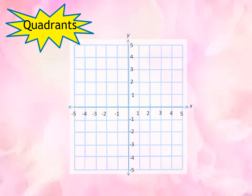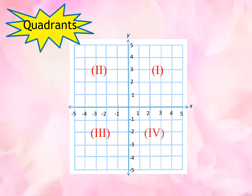So in a coordinate plane, we have four quadrants: Quadrant 1, 2, 3, and 4.